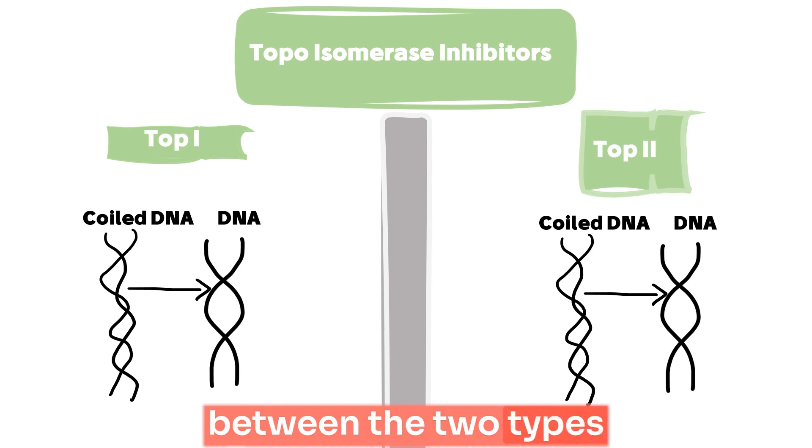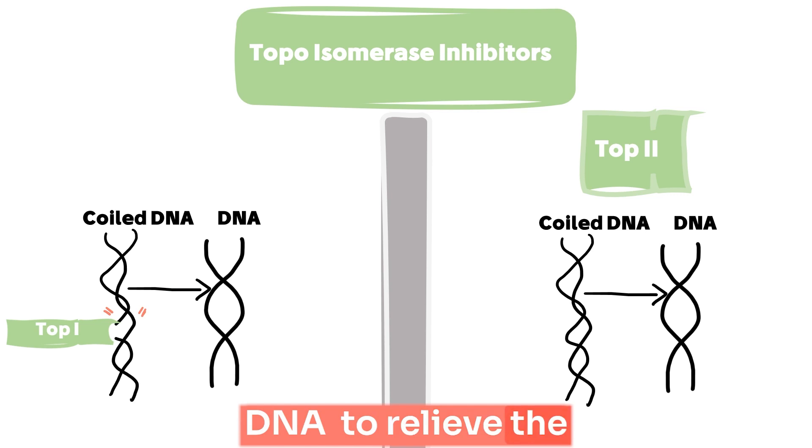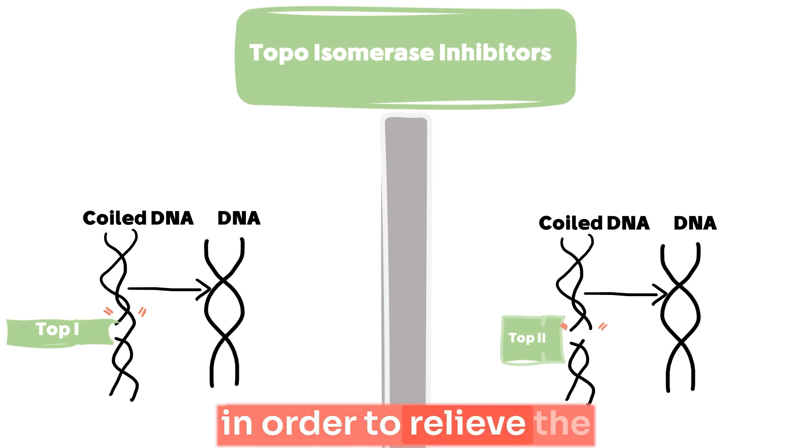The main difference between the two types of topoisomerase is that topoisomerase 1 cuts a single strand of DNA to relieve the tension or unwind the supercoiling. On the other hand, topoisomerase 2 cuts the two strands in order to relieve the supercoiling.